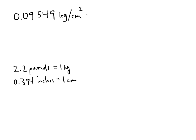We want to convert the kilograms into pounds. Kilograms are on the top of our fraction, so we multiply by a conversion factor that has kilograms on the bottom — that way the kilograms divide out. Since we want pounds on top, and 2.2 pounds equals 1 kilogram, our conversion factor is 2.2 pounds over 1 kilogram.